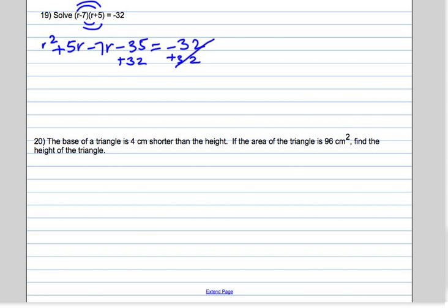So here we get r squared, 5r minus 7r is negative 2r, and negative 35 plus 32 is negative 3.